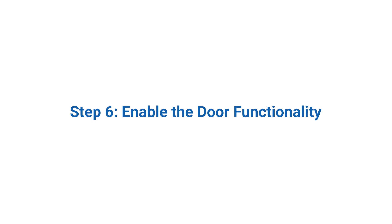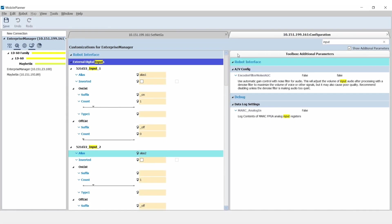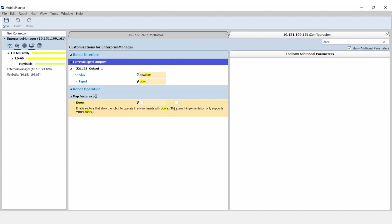Step 6. Enable the door functionality. In the Host Configuration tab, enable door functionality in the Map Features menu.